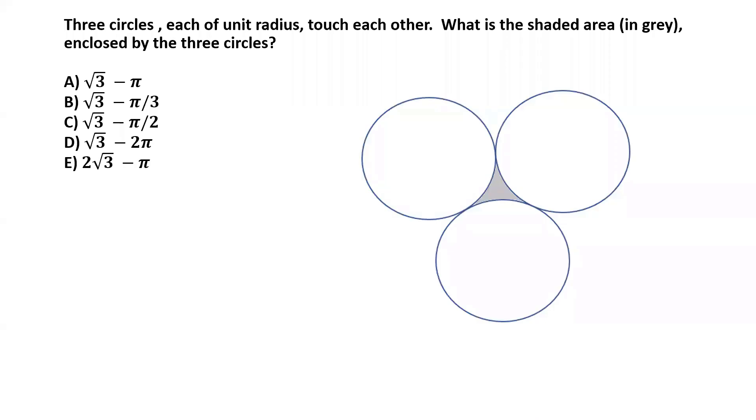Three circles each of unit radius touch each other. What is the shaded area in gray enclosed by the three circles? This kind of problem is pretty common in the geometry section of any standardized tests.